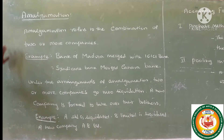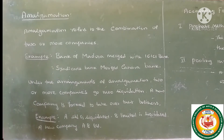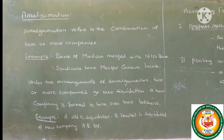What do you mean by amalgamation? Amalgamation refers to the combination of two or more companies. In Tamil: two or more companies coming together is called amalgamation.